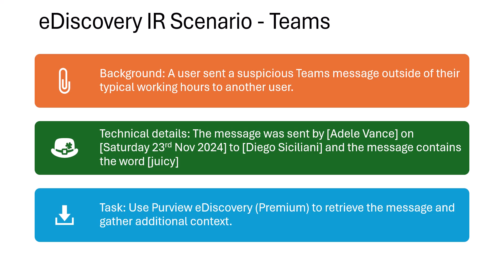I've structured this like a Microsoft exam scenario with background, technical details, and a task. The background: a user sent a suspicious Teams message outside their typical working hours. The technical details: the message was sent by Adele Vance, on Saturday 23rd November 2024, to Diego Cicielani, and contains the word 'juicy.' Those are the four criteria we'll need to find the message of interest.